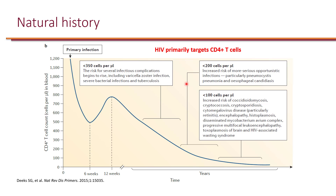Once you hit the 200 mark — CD4 less than 200 — that's when the risk of opportunistic infections becomes real. This is when you get pneumocystis pneumonia and esophageal candidiasis. As the CD4 goes even lower, less than 100, the number of opportunistic infections goes up further, including coccidioidomycosis, cryptococcosis, toxoplasmosis, and Mycobacterium avium complex.